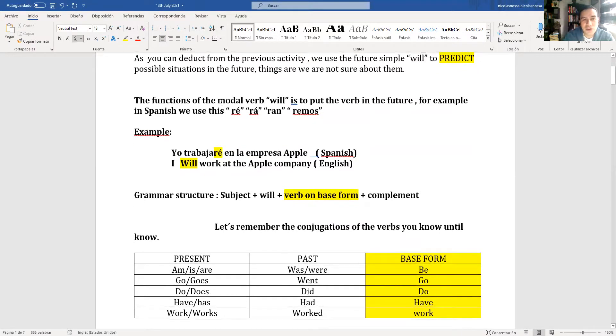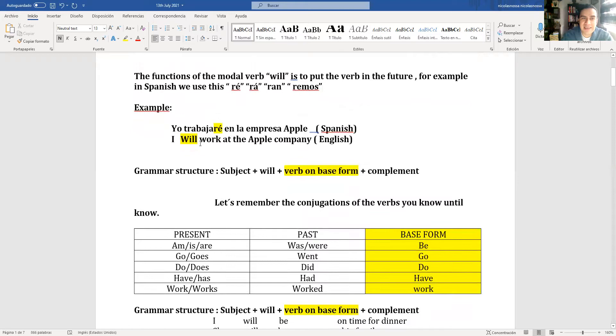The function of the modal verb will is to put the verb in the future. For example, in Spanish we use eré, erá, erán, or eremos. Example: yo trabajaré en la empresa Apple, that would be in Spanish. In English it would be I will work at the Apple company.